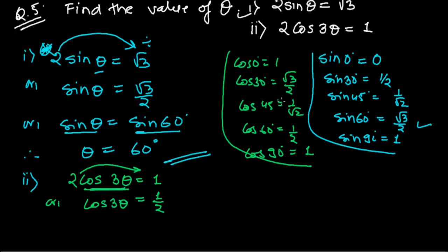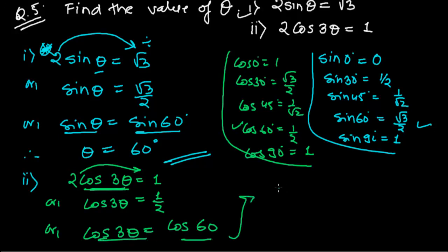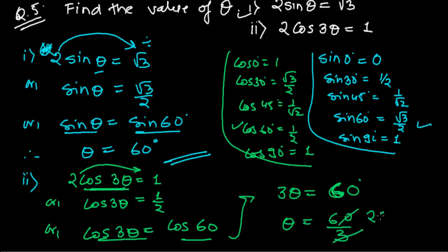Which trigonometric angle in the cosine table equals 1/2? It is cos 60°. So I can write cos 3theta = cos 60°. Since both sides are equal, 3 theta = 60 degrees, therefore theta = 20 degrees. This is how we solve these kinds of problems. Watch another type of problem in the next video. Thank you, bye bye.